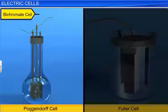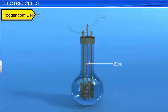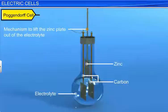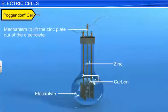The cell was set up in a long-necked glass bottle with a zinc plate located between two carbon plates. The electrolyte was a mixture of potassium dichromate and sulfuric acid. This mixture would dissolve the zinc plate even when the cell was not in use, so there was a mechanism for lifting the zinc plate out of the liquid and storing it in the neck of the bottle. To generate electric current, the zinc rod reacts with the electrolyte to get a negative charge, becoming the cathode. The carbon plates together act as the anode.